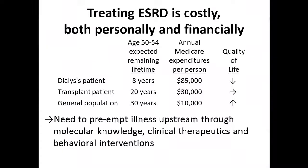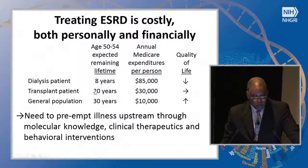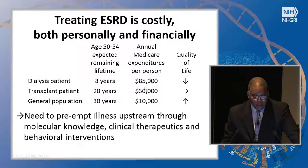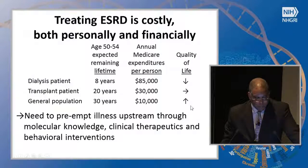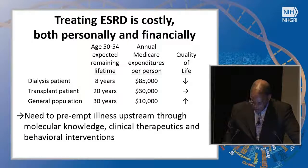Treating ESRD is costly, both personally and financially. A 50-to-54-year-old person's expected remaining lifetime in the general population is 30 years, but if you're a dialysis patient it's eight years, or 20 years if you're lucky enough to get a transplant. Annual Medicare expenditures are eight times higher for someone on dialysis than the general population. Quality of life is poor, although a transplant can restore quality of life comparable to the general population. There is a real need to preempt illness upstream through molecular knowledge, clinical therapeutics, and behavioral interventions.